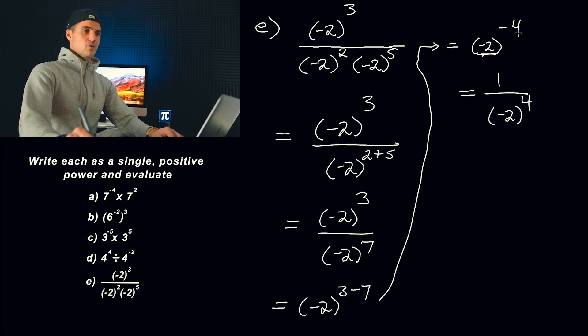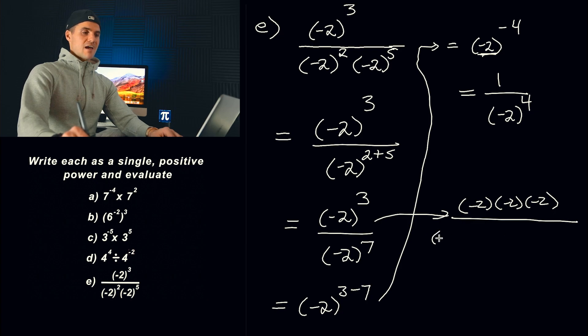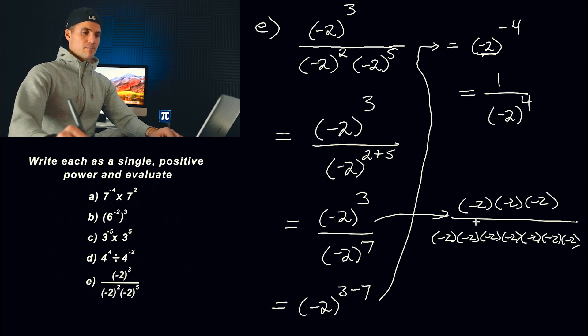Another way to look at it, another way I like to look at it is if we have this expression here, you could picture this as like three negative twos at the top and seven negative twos at the bottom. And so notice cancel, cancel, cancel, cancel, cancel, cancel, cancel. We've got a one at the top. How many negative twos are left in the bottom? There's four of them left.